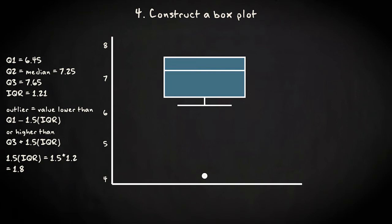1.8 above 7.65 means that values above 7.65 plus 1.8 equals 9.45 are outliers as well. We don't have values this high, so there are no outliers on this side of the box. The end of the whisker is the maximum value, which is 8.1. And voila, here's our box plot. The box plot shows at a glance that our observations lie between approximately six and eight, and that we have one clear outlier.